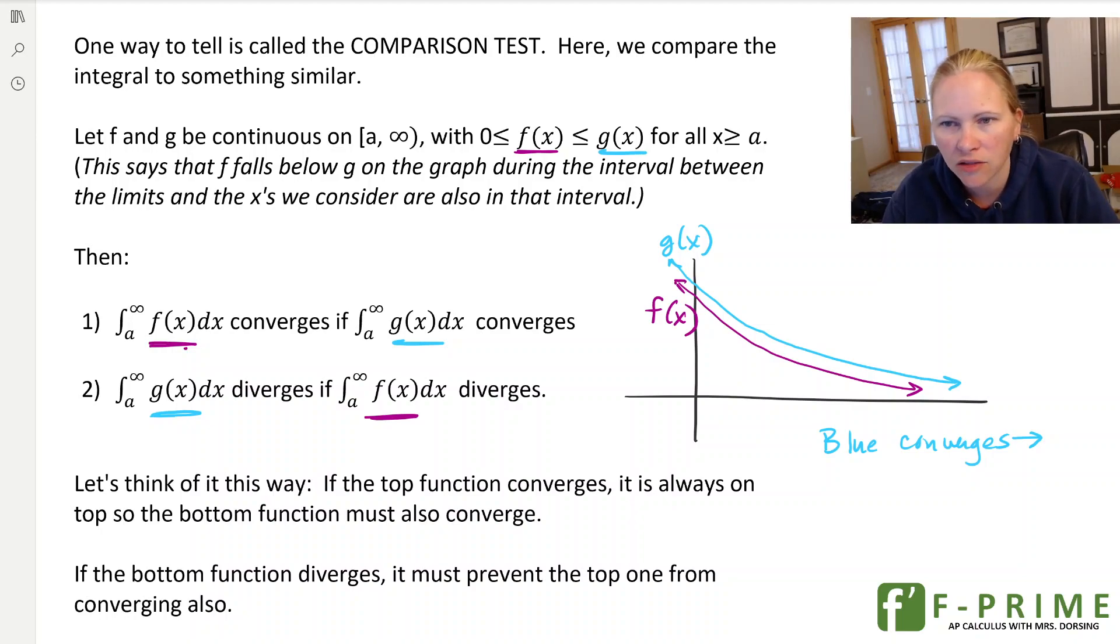Either you have a function that pushes down on the other one, or you have a function that pushes up on the other one. You cannot have one going up and away and assume that it brings the other. It doesn't pull it with it, it pushes. It's a pushing test. So you either have a function on top pushing to converge, or you have a function on the bottom pushing to diverge. You'll never diverge and pull the other one up with you. You'll never have the bottom one converge and pull the other one down with it. It's a pushing test, not a pulling test, if that makes sense.